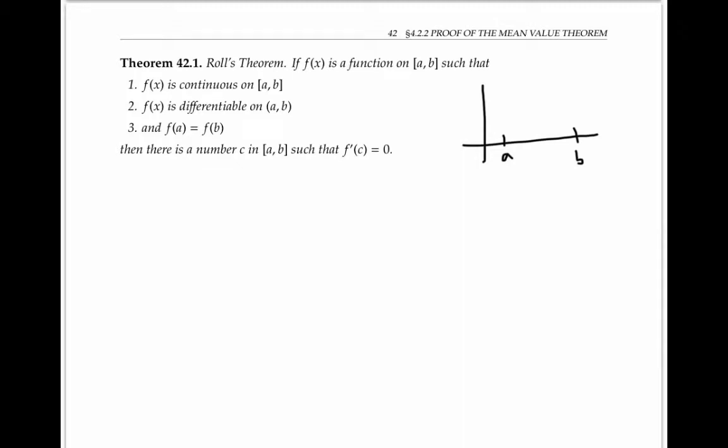Let's consider three cases. Case one is that the function is a constant. Case two is that the function rises above its value at the endpoints somewhere in that interval. And case three is that the function drops below its value at the endpoints somewhere in that interval. Now a function could possibly both rise above and fall below, but every function that satisfies the conditions of Rolle's theorem has to fall into at least one of these three cases. If it doesn't rise above and it doesn't rise below, it definitely is constant.